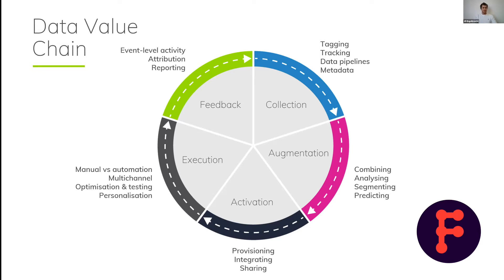When I was at Media24, we weren't happy with the existing attribution models at the time. We didn't believe they gave meaningful enough weight to the value that content played in a conversion. Our proprietary model essentially weighted the entire journey. I can share with you that newsletters and email messages consistently had a weighted conversion attribution of 50%, 60%, 70%. It is a cheap medium that people really engage with, it does drive conversion downstream, and it creates a foundation for performance marketing and direct conversion marketing.